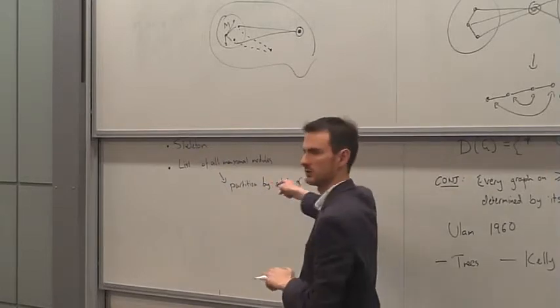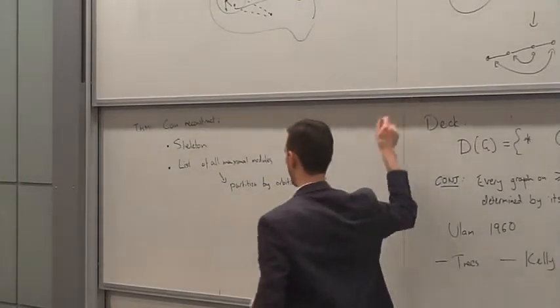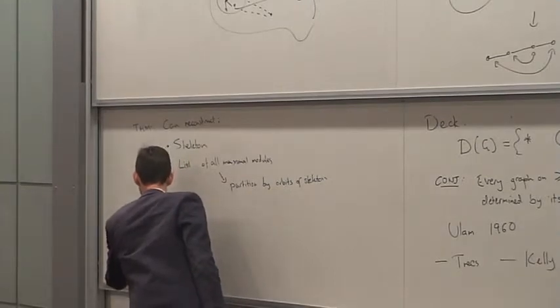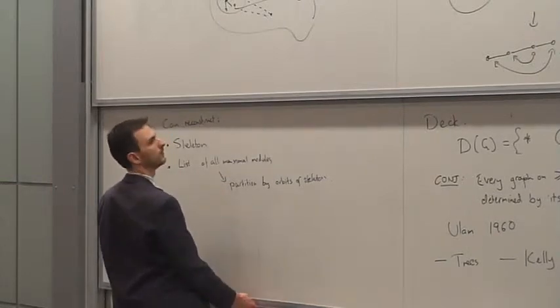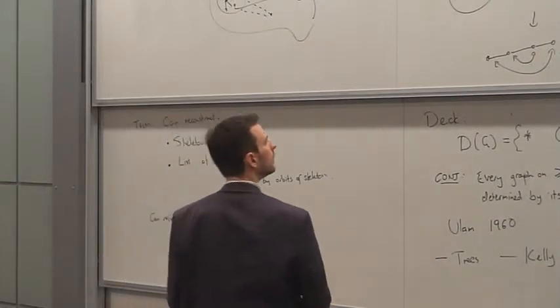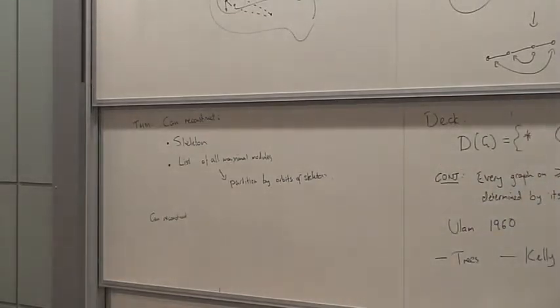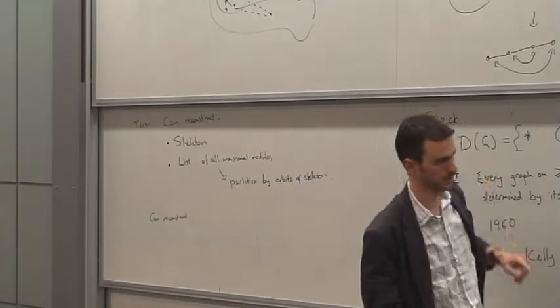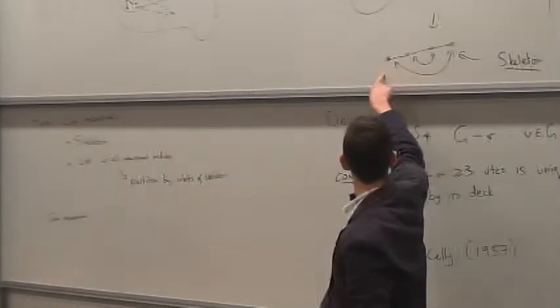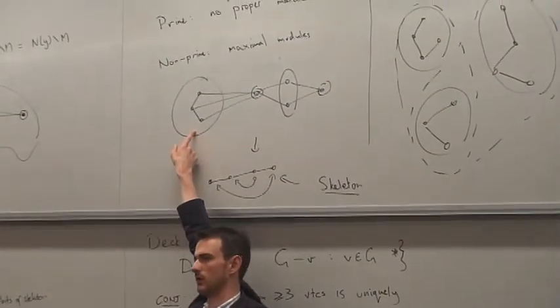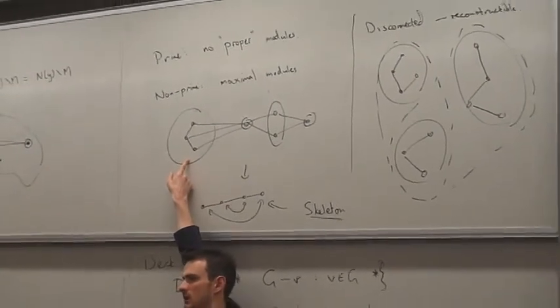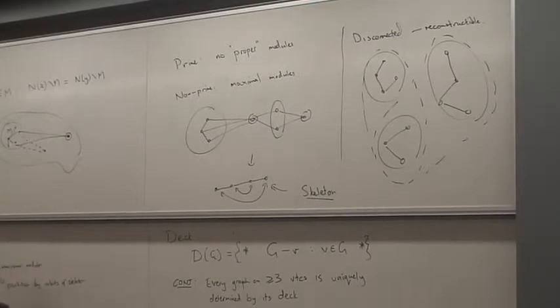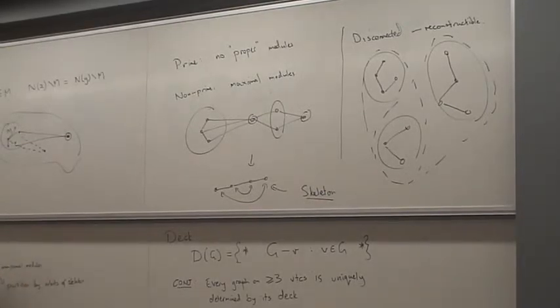And this is enough to let me reconstruct the graph in a fair number of cases. And so the final thing I want to say is that there are a lot of special cases. I'm not going to tell you what they all are. But there are things you can do such as I can reconstruct this graph, for example, because in this orbit here, this module, if I delete a vertex from it, I don't see it anywhere else.